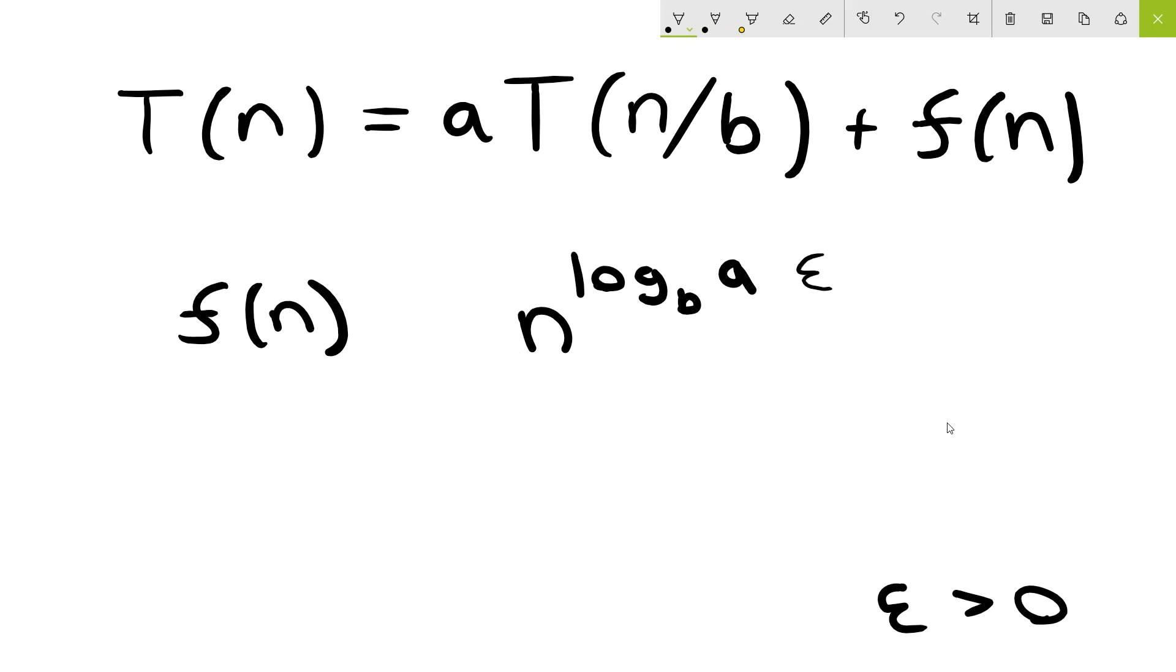Finally, we'll cover the last case, case number three. This is the case where f of n is greater, or in asymptotic speak is equal to omega of n log base b of a plus epsilon. So it's significantly bigger than n log base b of a.